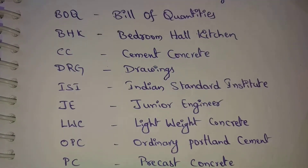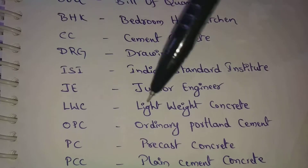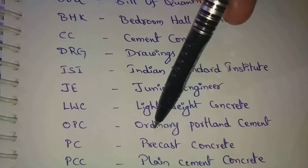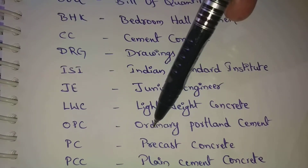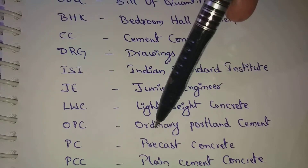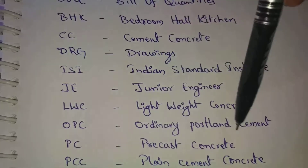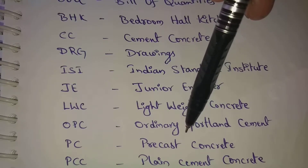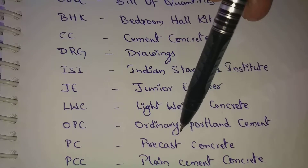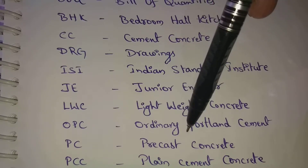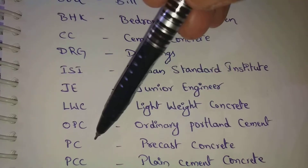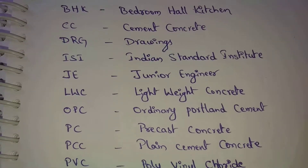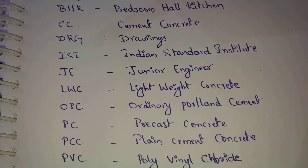Next, OPC — OPC means ordinary Portland cement. OPC is generally used for general constructions. Next, PC — PC means precast concrete. Precast concrete has two types: pre-tensioning concrete and post-tensioning concrete. For pre-tensioning concrete, M40 grade concrete is used. Next, PCC — PCC means plain cement concrete. PCC is used below footings.